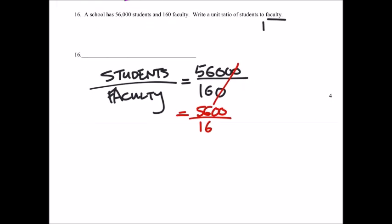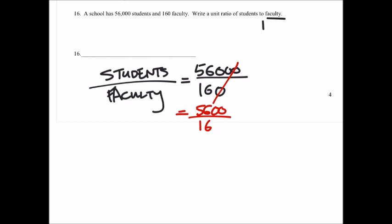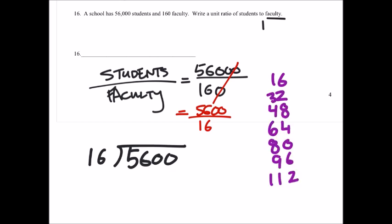And then we have 5600 divided by 16. Let's see how that plays out. Well, it's not too bad like the last one. So 5600 divided by 16. Let's look at multiples of 16. Alright, let's see how far that takes us.